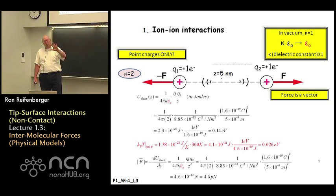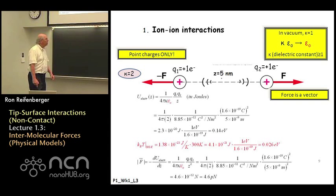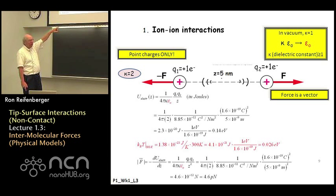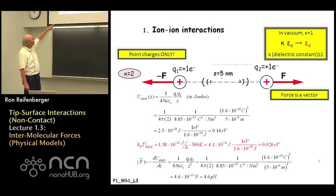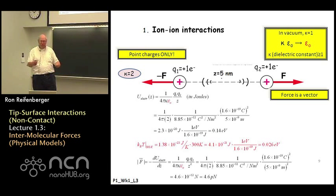It's also useful to consider the thermal energy relevant for any situation. Thermal energy can be estimated by simply multiplying Boltzmann's constant k_B times the temperature T in degrees Kelvin. So I calculate thermal energy k_B T at room temperature, which is essentially 300 Kelvin, and what I find is that the thermal energies are on the order of 0.03 electron volts, whereas the Coulomb electrostatic interaction between these two ions separated five nanometers apart — each with a charge of plus one electron — is 0.14 electron volts. So the electrostatic interaction in this case is much stronger than the thermal interaction, and so the electrostatics is going to win and dominate the motion of these two charges.